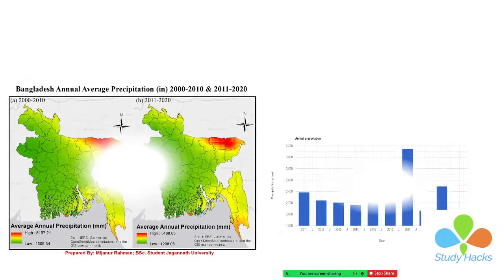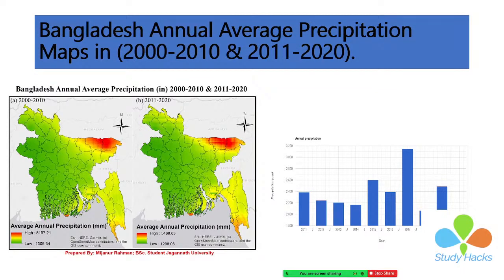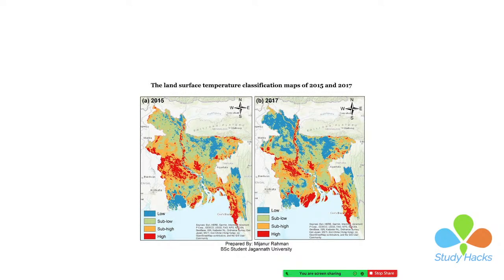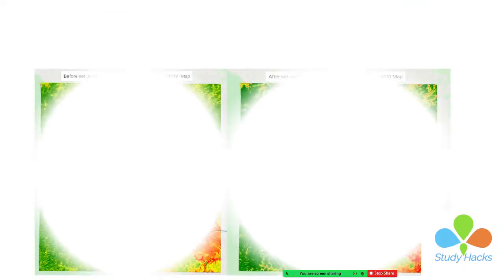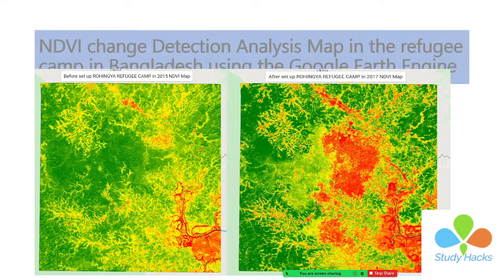This is another project for the average precipitation map. This is another project for the land surface temperature classification map — we can classify low, sub-low, sub-high, and high land surface temperature between two years. This is another research project showing the condition of NDVI before and after the setup of the Rohingya camp in 2017 versus 2015, to understand what the NDVI condition change was between the two periods.